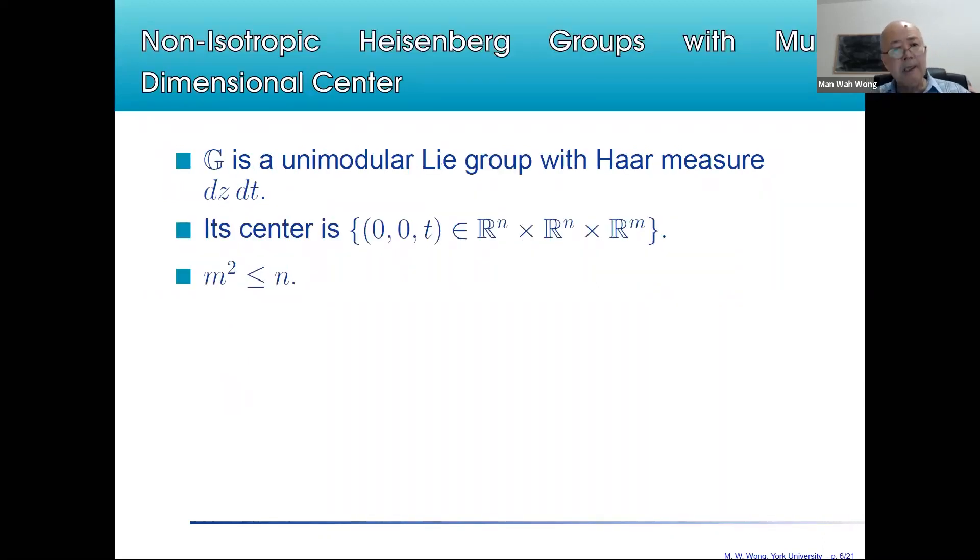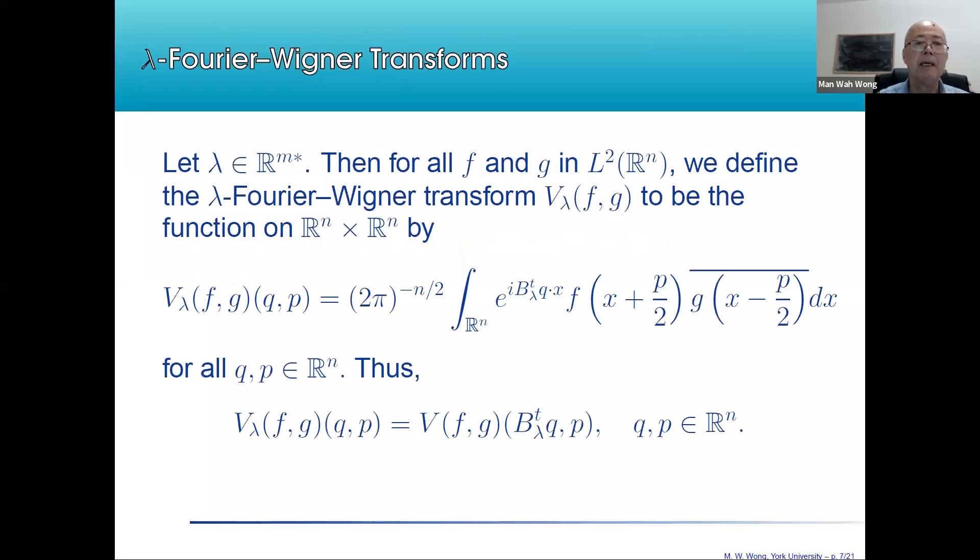With this group law, this group is a unimodular Lie group with Haar measure given by the Lebesgue measure. It is easy to see that the center of this new Heisenberg group is the set consisting of the points (0, 0, T). In order to achieve this, we impose the restriction that M squared has to be less than or equal to N.